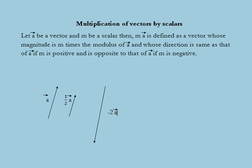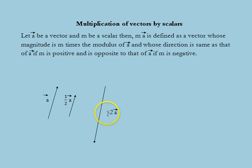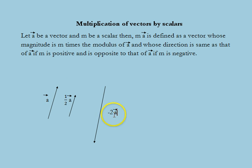A geometric visualization of multiplication of vector a by a scalar is shown here. This vector represents vector a, and half of vector a is represented by this vector, whereas negative twice of vector a, that is minus 2 into a, is represented by this vector in which the magnitude is twice that of vector a and its direction is opposite to that of vector a. Thus the magnitude is m times the modulus of vector a, and the direction is the same as that of a if m is positive and opposite if m is negative.